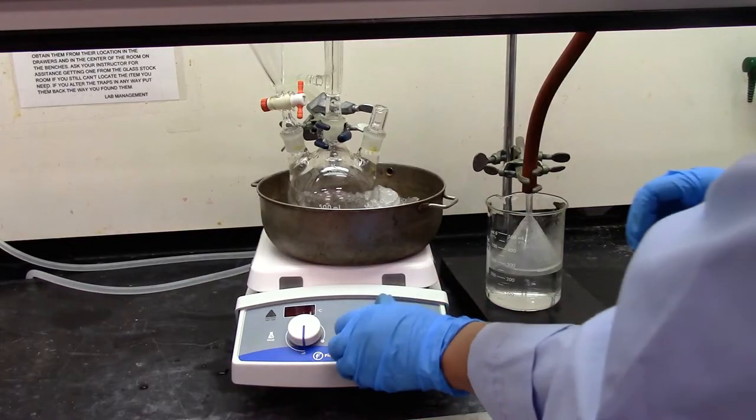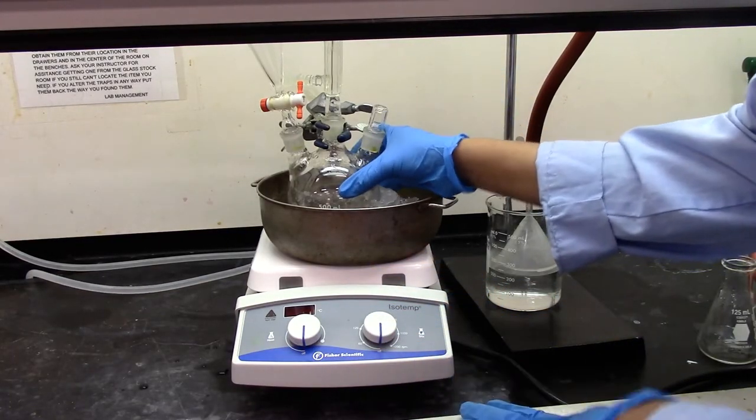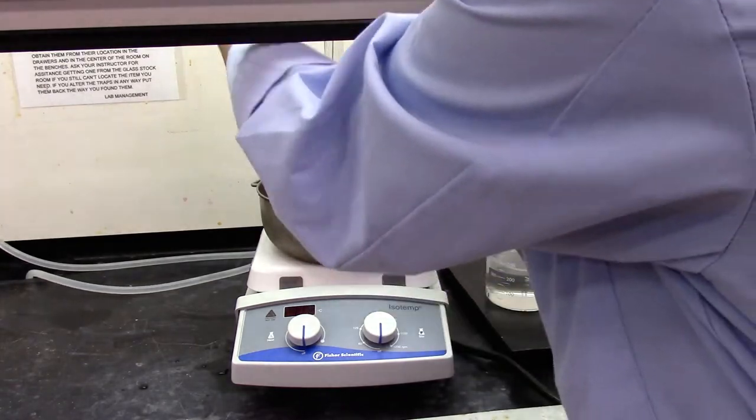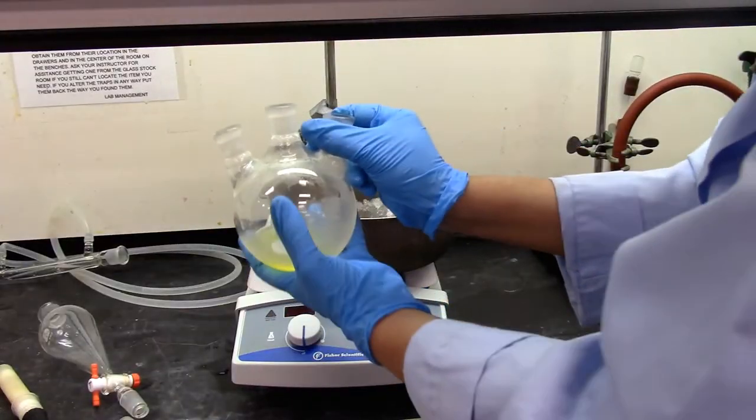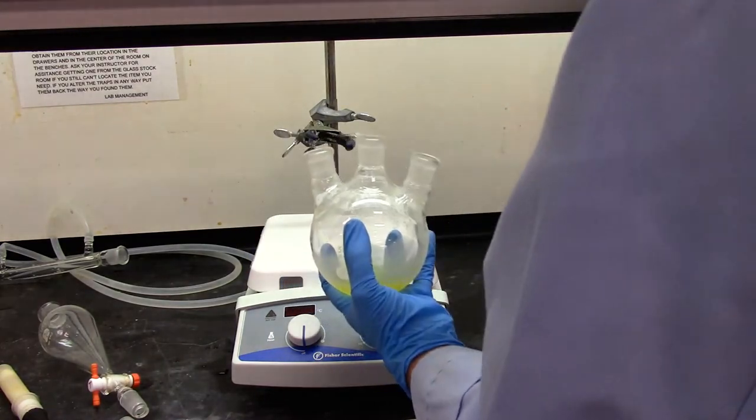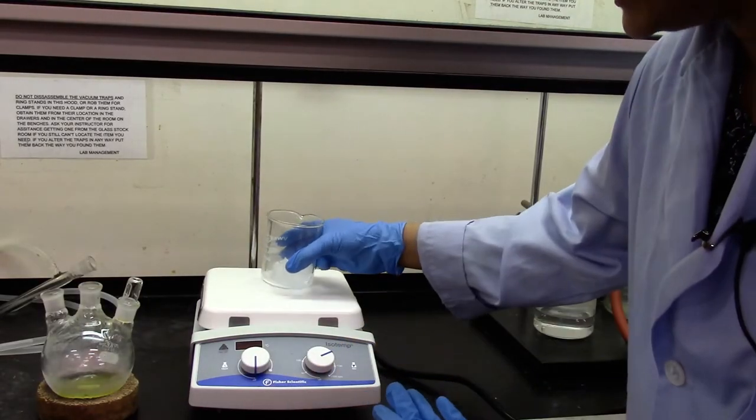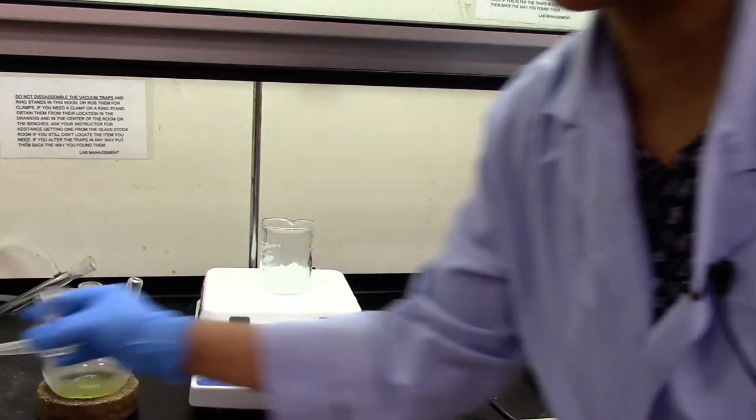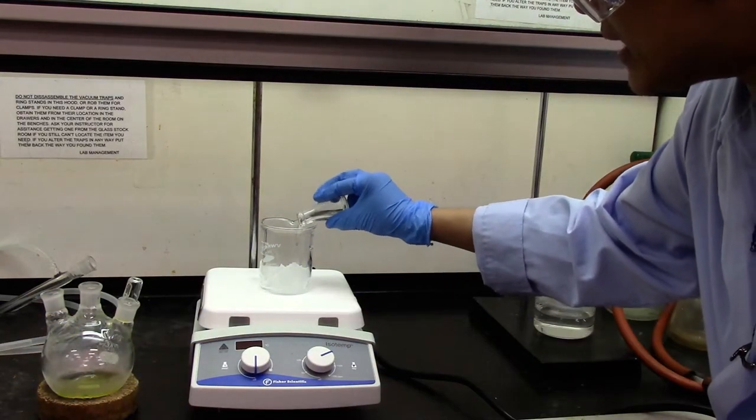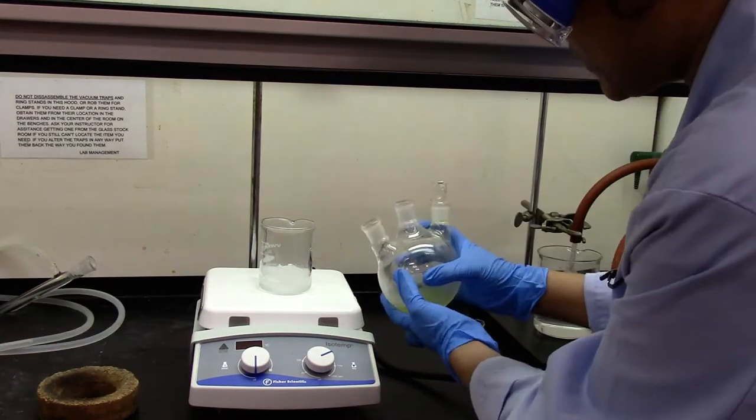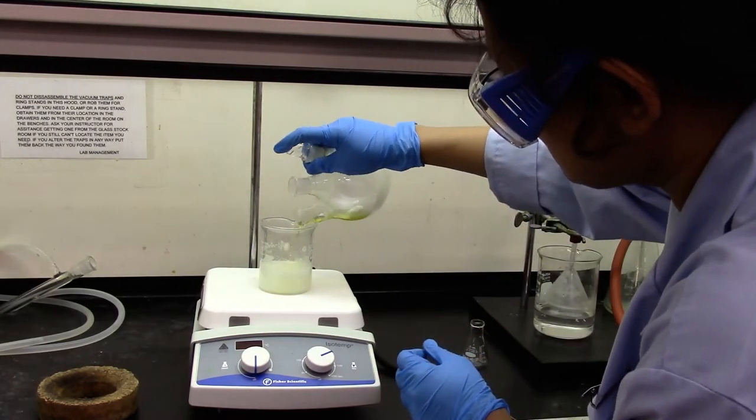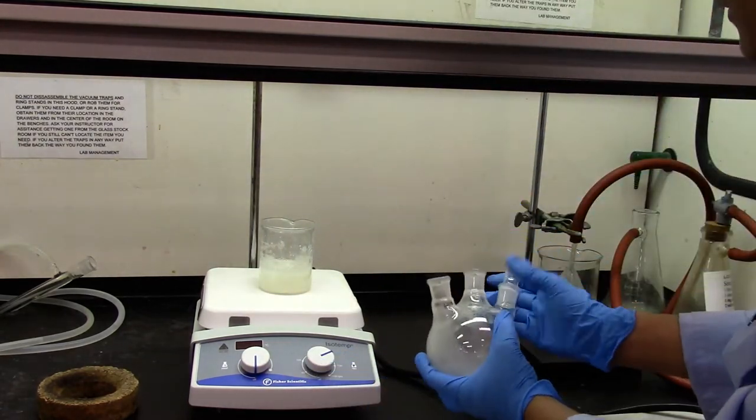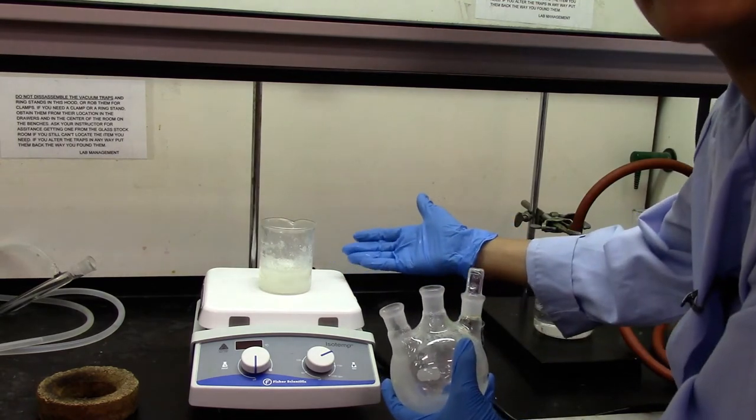We're going to stop the stirring and take out the round bottom flask. So here's our product mixture. Here's my 25 grams of ice. I'm going to add about 13 mL of concentrated hydrochloric acid. Transfer the reaction mixture with the stir bar into the beaker. I will let it stir for about 15 minutes.